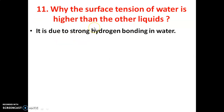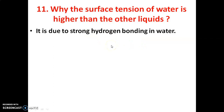Why is the surface tension of water higher than other liquids? The surface tension of water is higher compared to other liquids because water molecules contain hydrogen bonding. Therefore, it has high surface tension compared to other liquids.